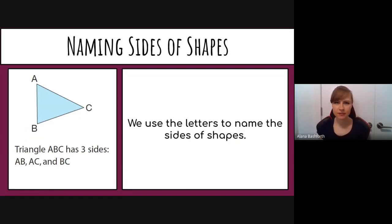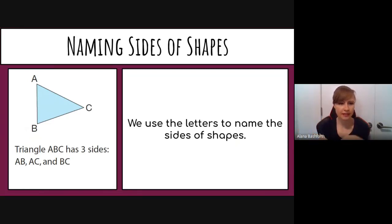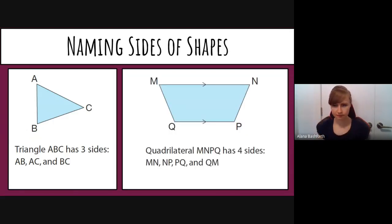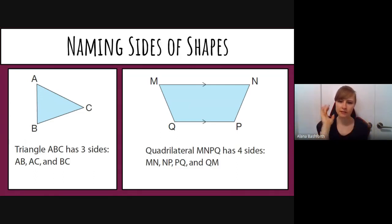We can also use those vertex letters to name the sides of a shape. Triangle ABC has three sides: AB, AC, and BC. For quadrilateral MNPQ, the sides are MN, NP, PQ, and QM. You just identify the two vertices that start and finish each side.